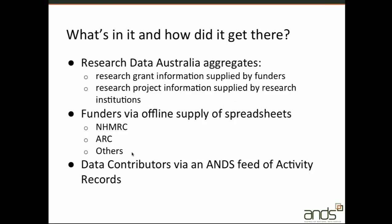The ANS registry aggregates lists of research grant descriptions provided by funders, and it also aggregates lists of project descriptions provided by research institutions and agencies. Currently we have 45,000 grant descriptions just from the two major funders, ARC and NHMRC, and we also have 2,000 research project descriptions. The research project descriptions have been supplied as activity records in RIF-CS format by our data contributors.